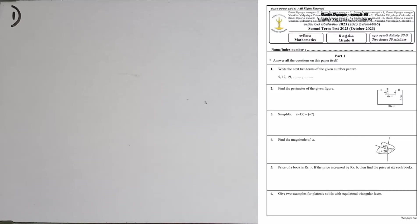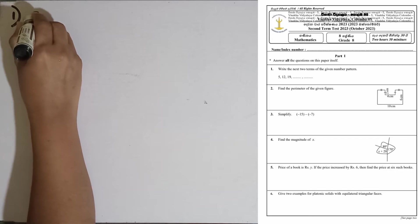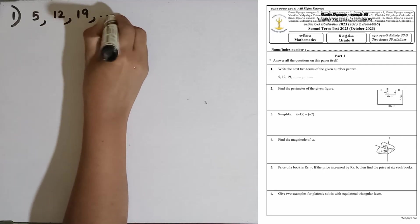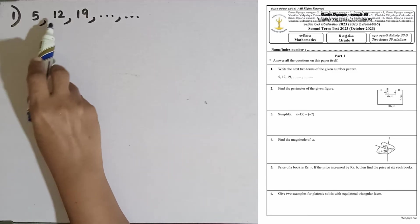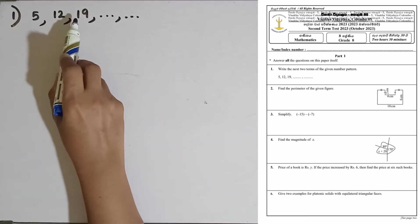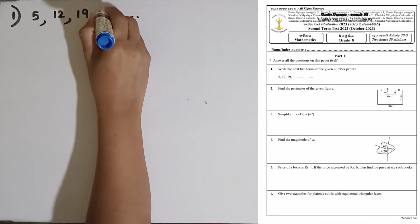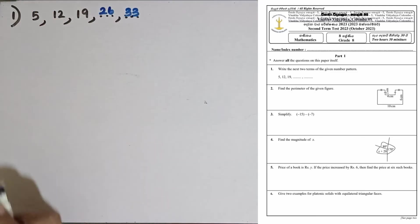Question number 1: Write the next two terms of the given number pattern. We are given this number pattern 5, 12, 19. We have to find the common difference between each successive term. 5 plus 7 is 12, then 12 plus 7 is 19, then 19 plus 7 is 26, then 26 plus 7 is 33. These are the next two terms.